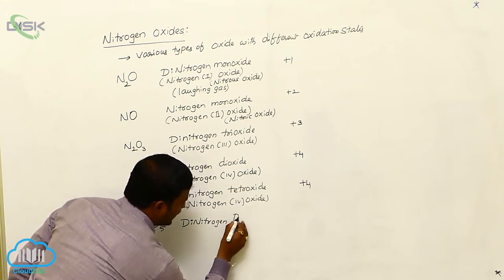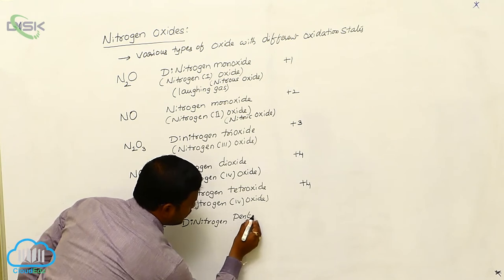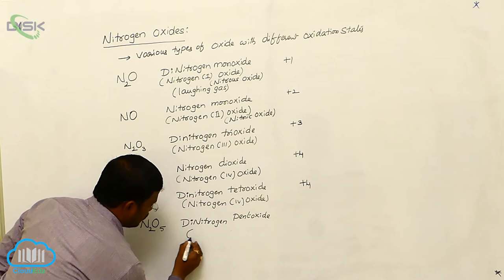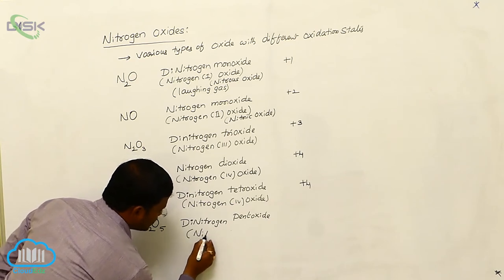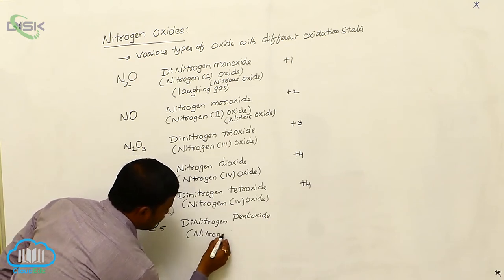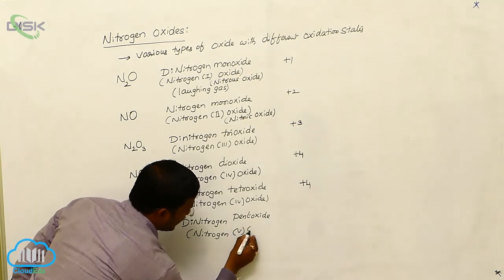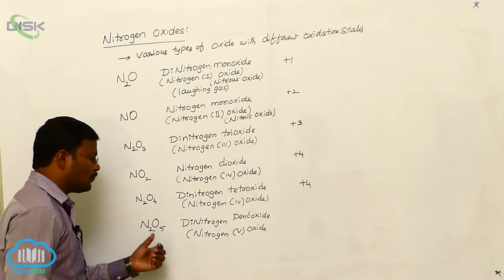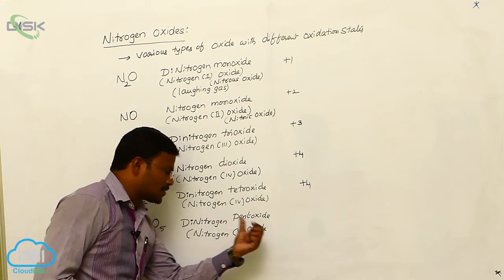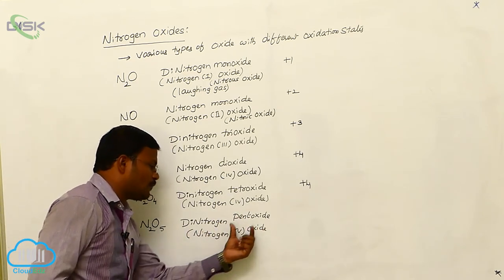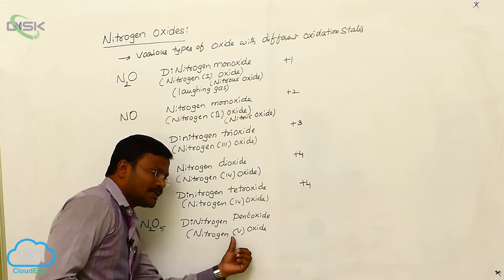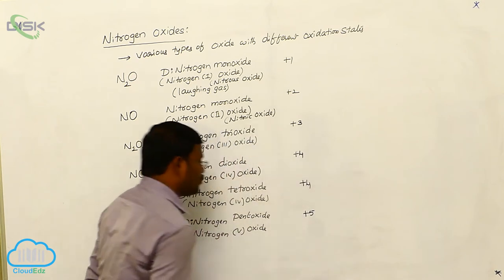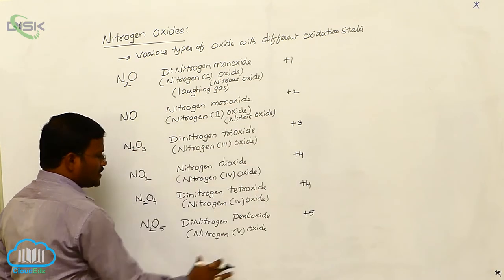The last oxide resulting from nitrogen is N₂O₅. It is called dinitrogen pentoxide, also called nitrogen(V) oxide. The Roman numeral 5 indicates that the oxidation state of nitrogen in N₂O₅ is +5.